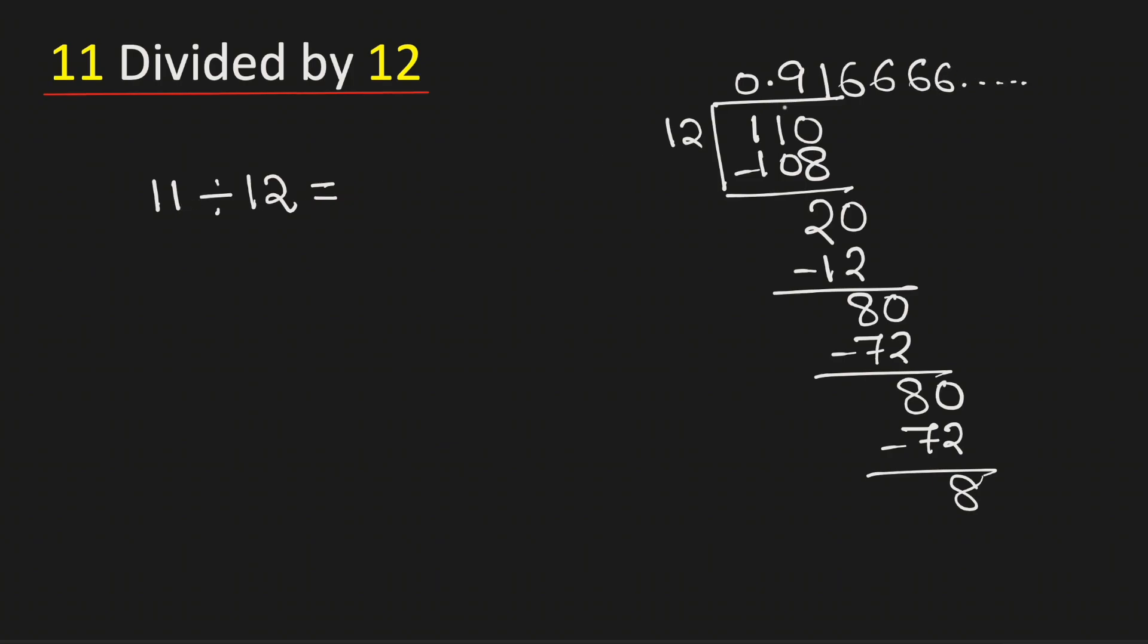Therefore, 11 divided by 12 is equal to this number which is 0.91666 and so on. And this can be written as 0.916 bar. This means 6 gets repeated. And this is our final answer.